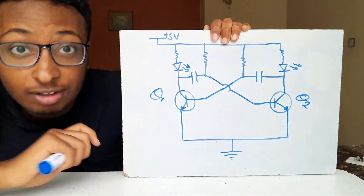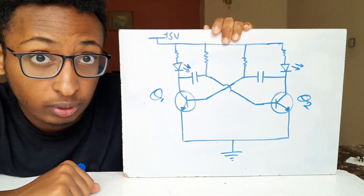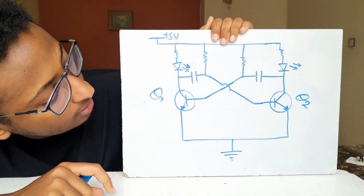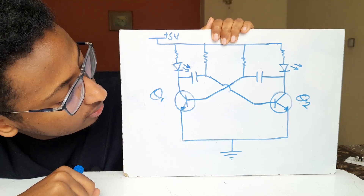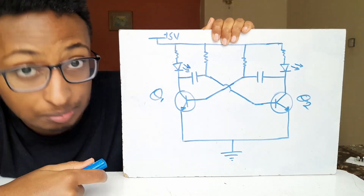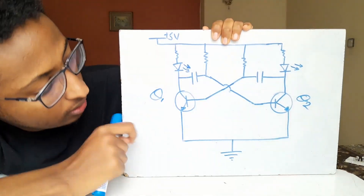ZVS circuits are based on a circuit called an astable multivibrator. I'm not going to tell you why it's called that, but it's a device that creates an oscillation. My ZVS circuit that I showed in my previous video is based upon this simple schematic — an astable multivibrator — and this schematic is a lot easier to understand than the ordinary ZVS circuit.